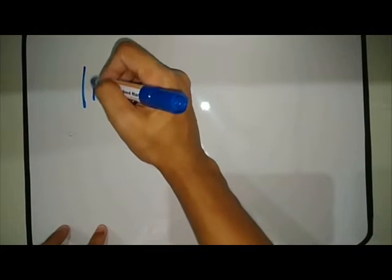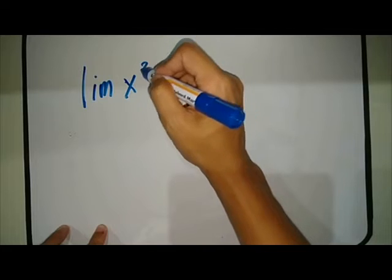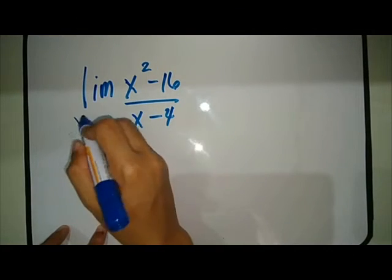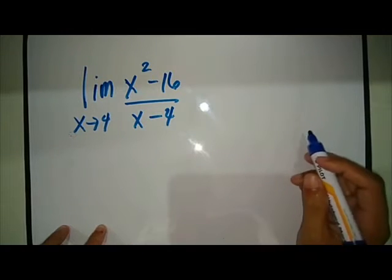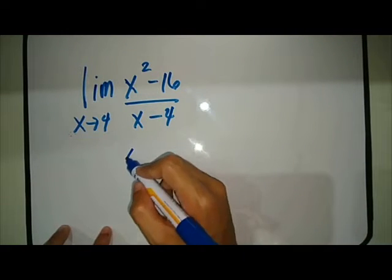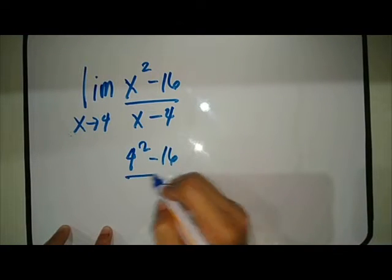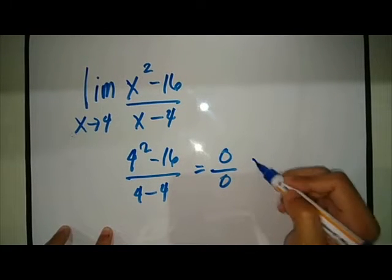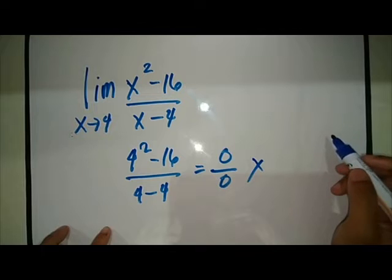Now, let's go back to limits. Let's say limit of (x² - 16)/(x - 4) as x approaches 4. Now, if we simply substitute 4 to the given function, we have, so that is 0 over 0. So what is that? So that's indeterminate.